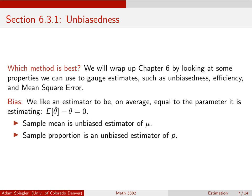We say an estimator is unbiased if, on average, the expected value of that estimator is equal to the actual value of theta. So in other words, an estimate theta-hat is unbiased if its expected value minus the actual value of theta equals zero. We've seen this in the context of bootstrap distributions. For example, the expected value of x-bar is mu, making it an unbiased estimator of the population mean. And if we're dealing with a binomial distribution and don't know p, p-hat, the sample proportion, is also an unbiased estimator for the population proportion p.